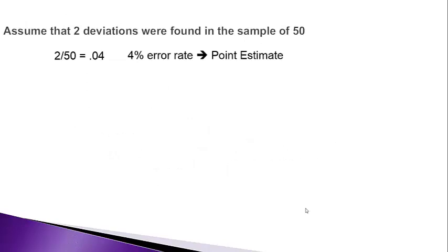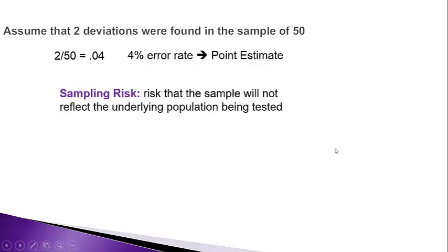Let's assume that in our sample of 50 we found two deviations. Two deviations give us an error rate of 4%, and that 4% from our sample results is called the point estimate. Do we think the error rate is exactly 4% for all 10,000? The answer is no, because our sample of 50 out of 10,000 may not be truly reflective of what's going on.